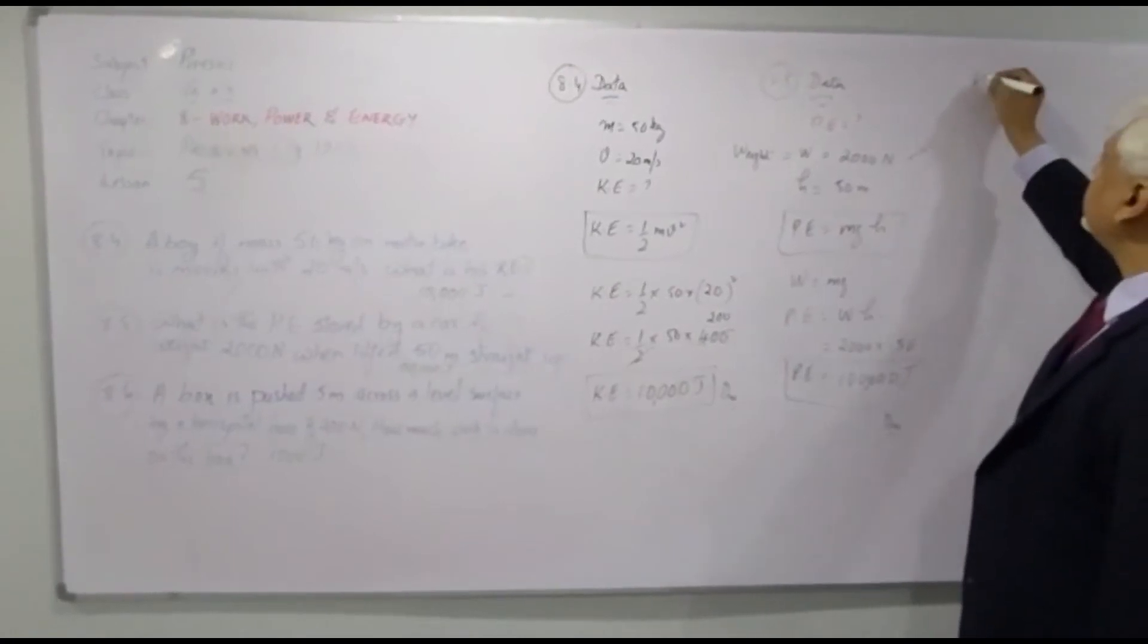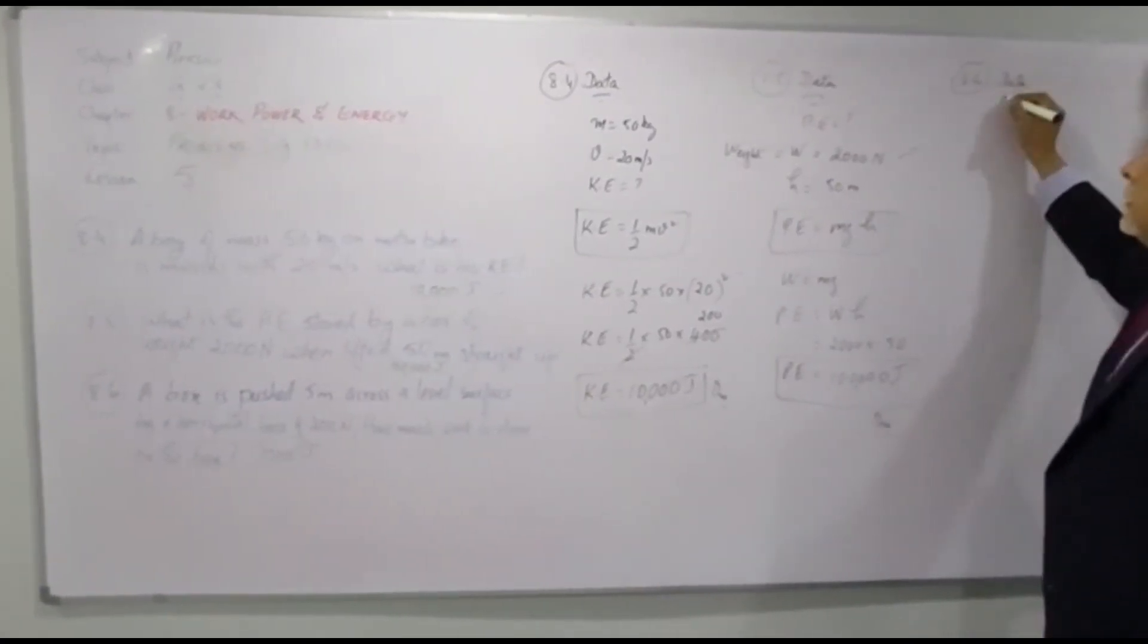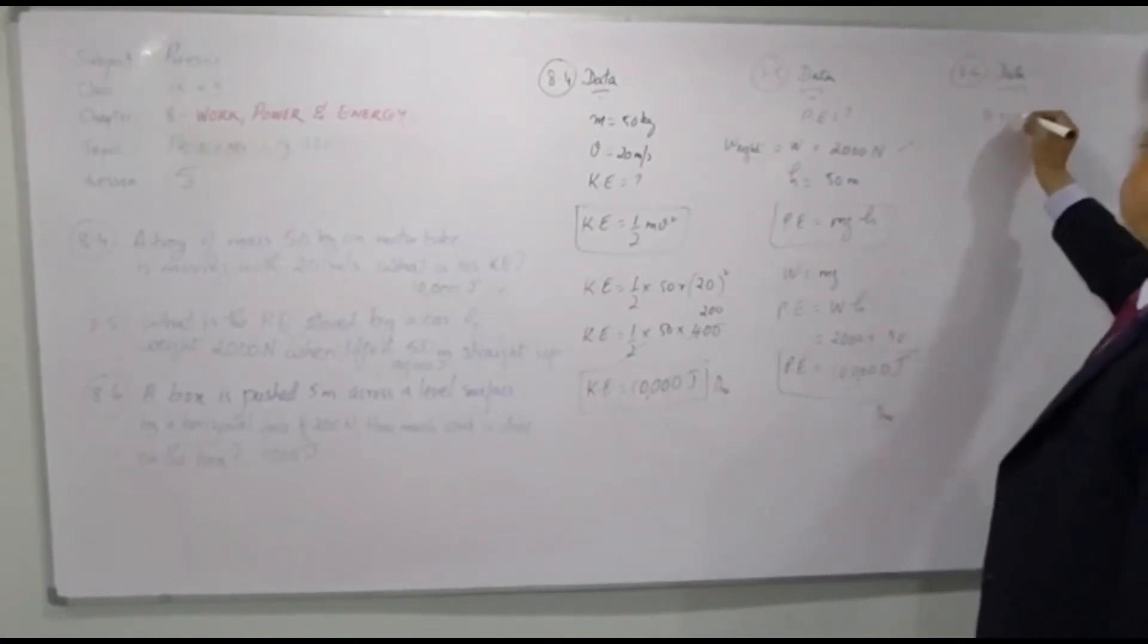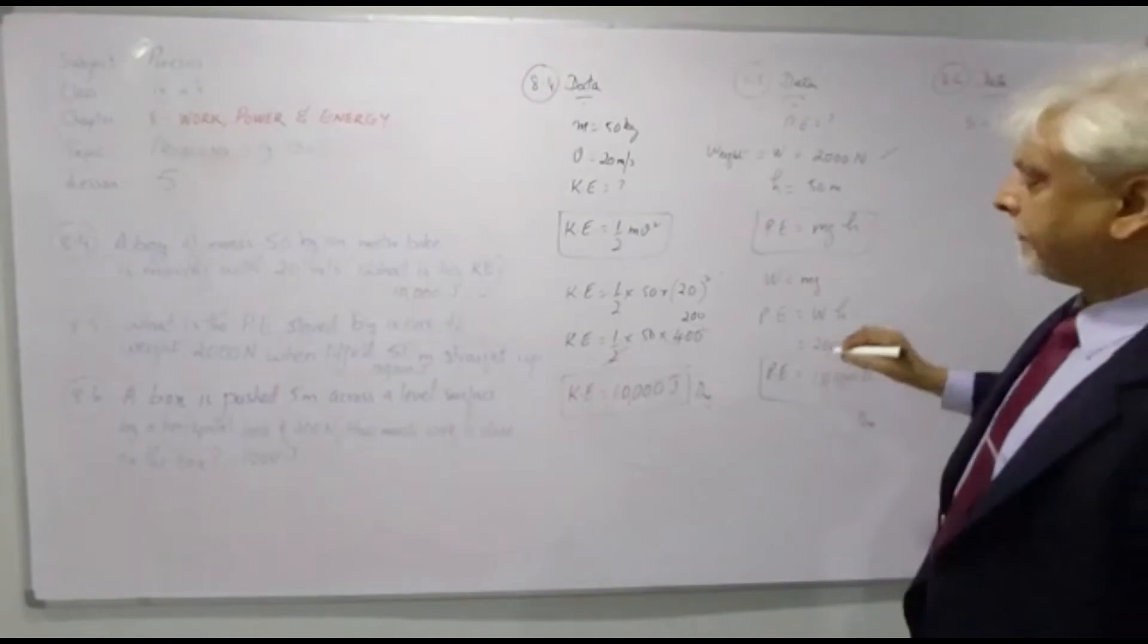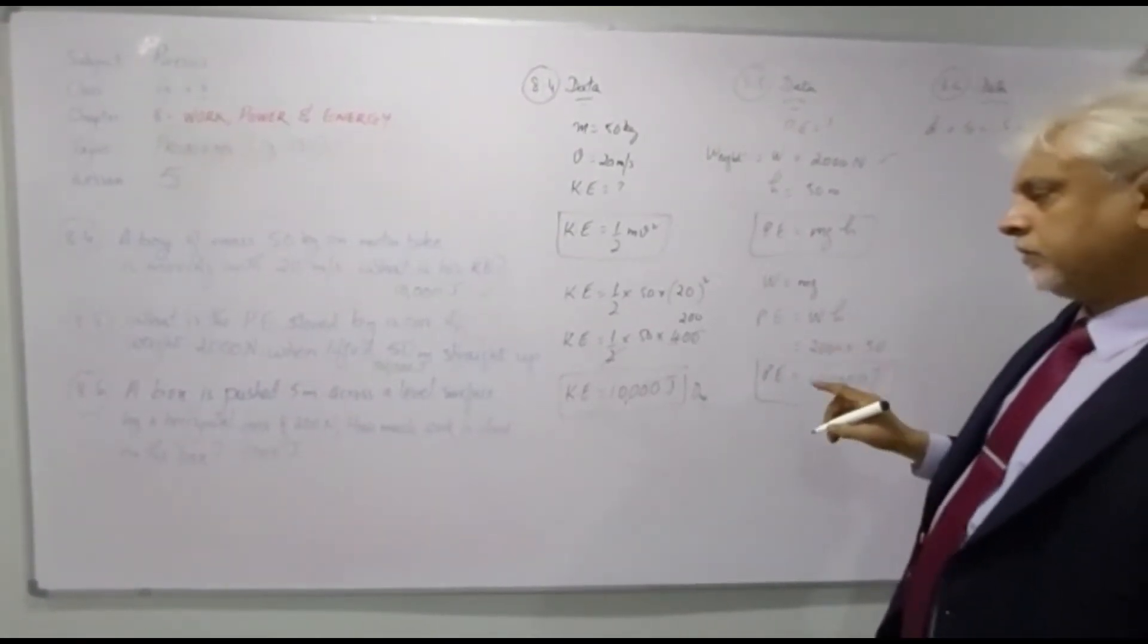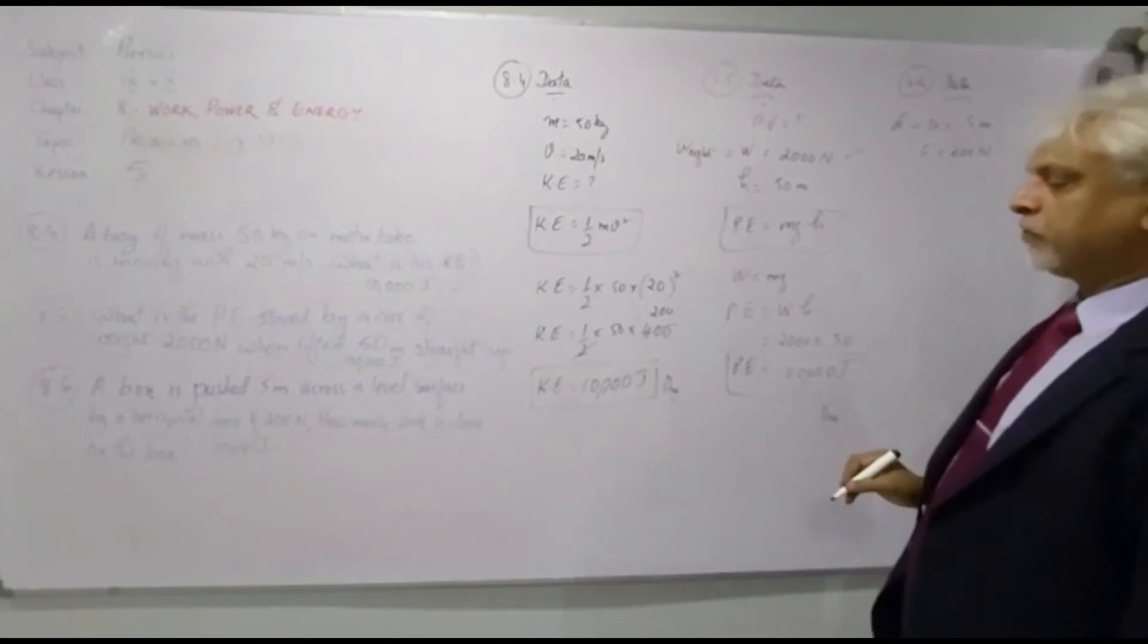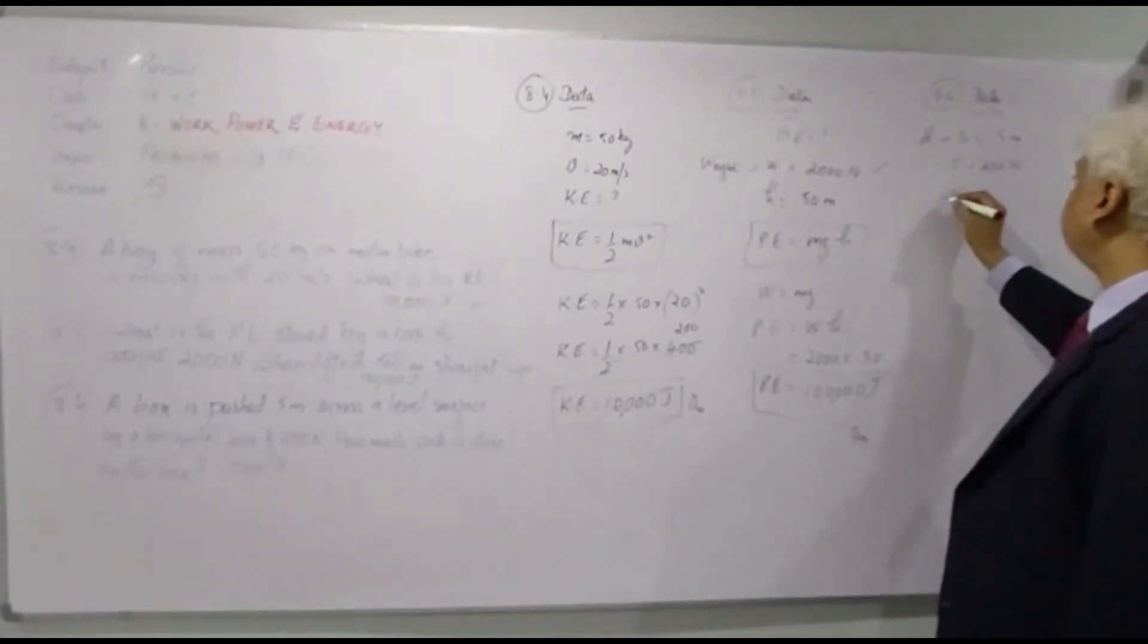Now 8.6. A box is pushed 5 meters across a level surface. Now the distance is 5 meters or displacement, same thing in this case. By horizontal force of 200 Newton. The force applied is 200 Newton. How much work is done on the box? Work is what you need to find out. Just clarifying this is work.